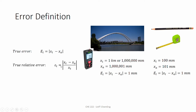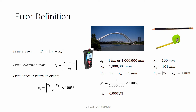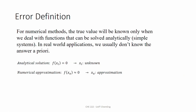That better definition is the true relative error ε_t, defined as (x_t − x_a) / x_t, expressed as a percentage. For the bridge, the true percent relative error is 1/1,000,000 = 0.0001%, whereas for the pencil it is 1/100 = 1%. Even though the true errors were the same, the relative errors are very different — the pencil has a much larger relative error.